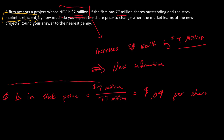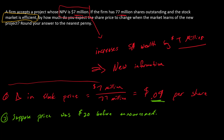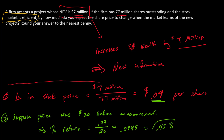The second way we could think about this is as a percentage change — the percentage return upon the announcement of the new project. Suppose the price was $20 before the announcement. The percentage return is the change in stock price divided by the pre-announcement price. So the percentage return is $0.09 divided by $20, which equals $0.0045, or about 0.45% — roughly half a percent positive stock return upon the announcement.